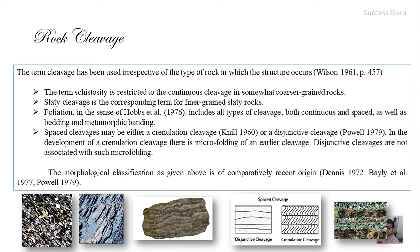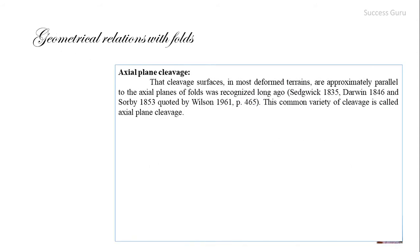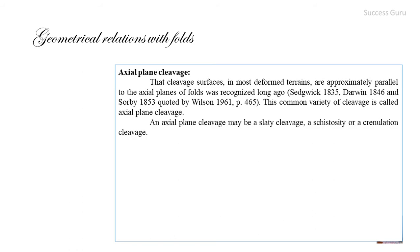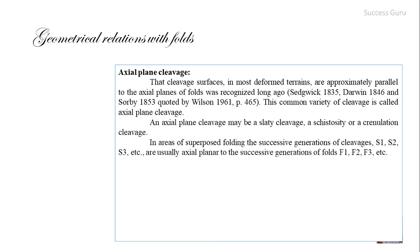Now we look at the geometric relation between cleavage and folding. Cleavage surfaces in most deformed terrains are approximately parallel to the axial plane of folds — this common variety is called axial plane cleavage. A cleavage plane parallel to the axial plane of the folded region is the axial plane cleavage, and it may be slaty cleavage, schistosity, or crenulation cleavage, as long as it is parallel to the axial plane.